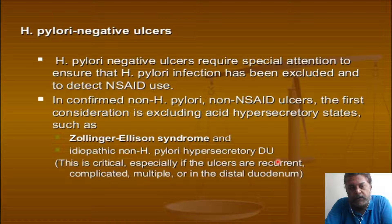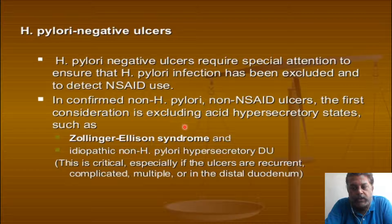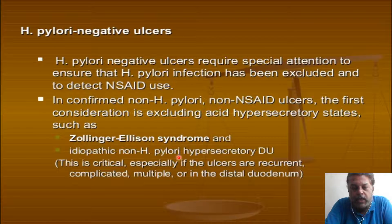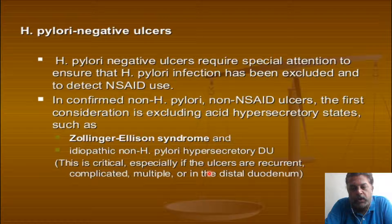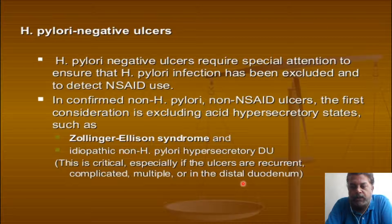If the patient is H. pylori negative, special attention is required to ensure H. pylori infection has been excluded and to detect NSAID use. In confirmed non-H. pylori patients (NSAID ulcer), the first consideration is excluding an acid hypersecretory state - that is Zollinger-Ellison syndrome. Here ulcers are many, recurrent, complicated, and in unusual locations, and are very difficult to treat and recur very early. If there is some family history, this etiology should always be considered.